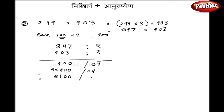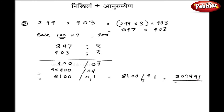Now I have a negative sign on my right hand side which has to be eliminated. I will write minus 9 as minus 10 plus 1. So the left hand side is 8100 and the right hand side becomes minus 10 plus 9. This minus 1 will be subtracted from the left hand side, giving 809991 as my answer. Remember, we multiplied one of the numbers by 3, so my final answer must be divided by 3. Dividing by 3 gives 269997 as my final answer.